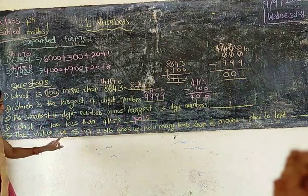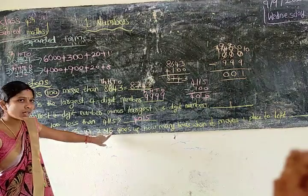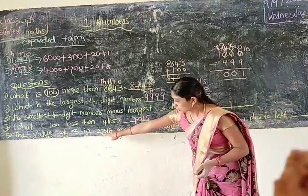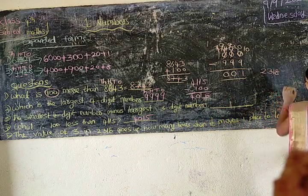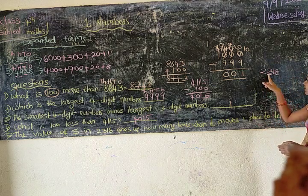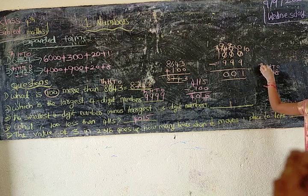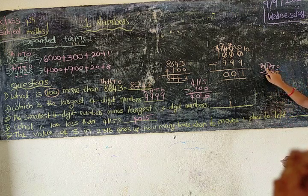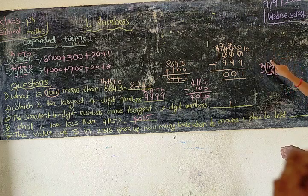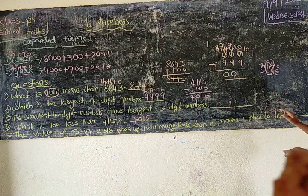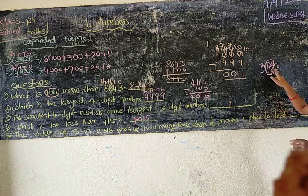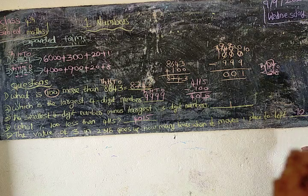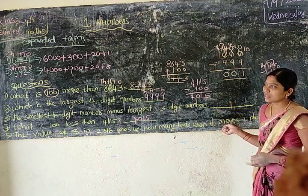Next: the value of three in two thousand, three hundred and eighty — how many times does it go up when it moves one place to the left? Three is in the hundreds place. When it moves one place to the left, it goes to the thousands place. So the value increases ten times.